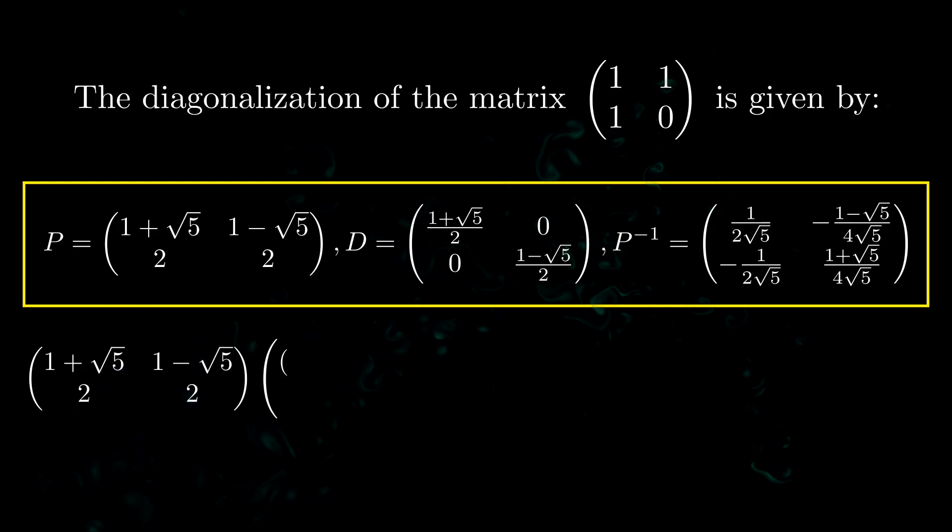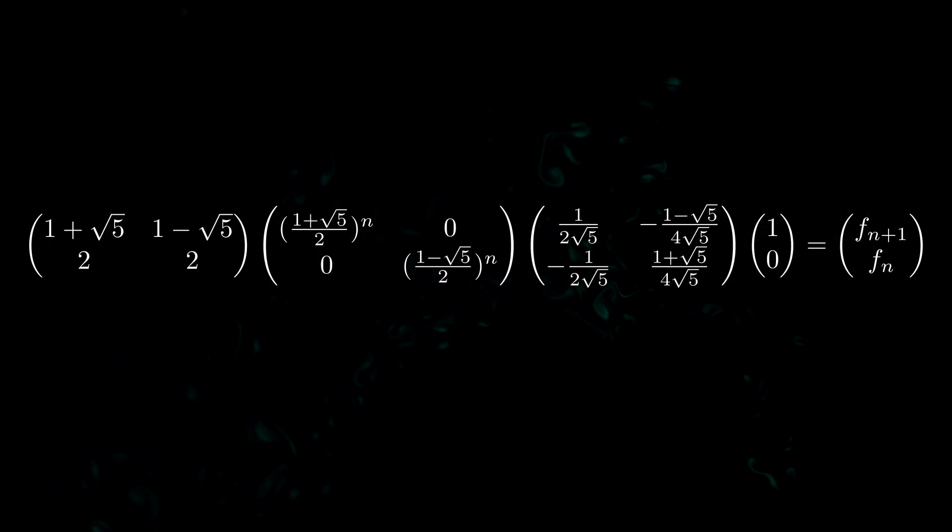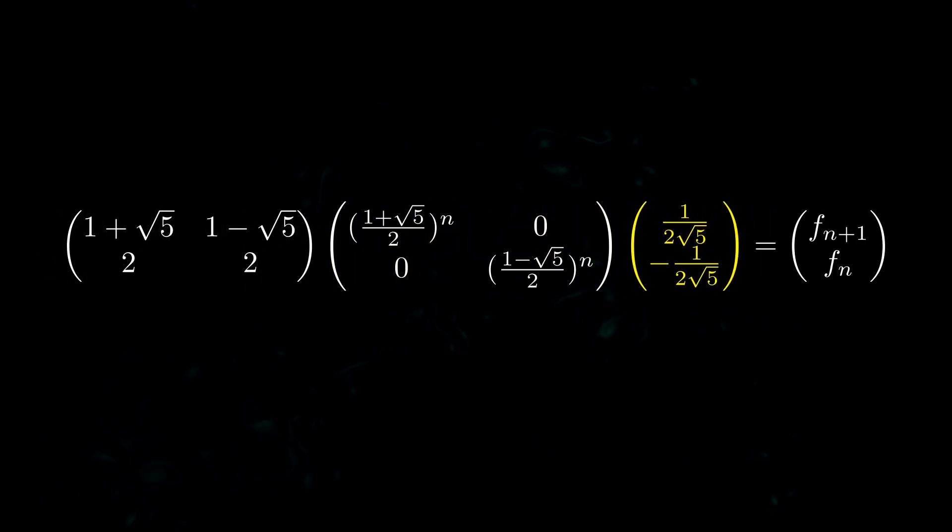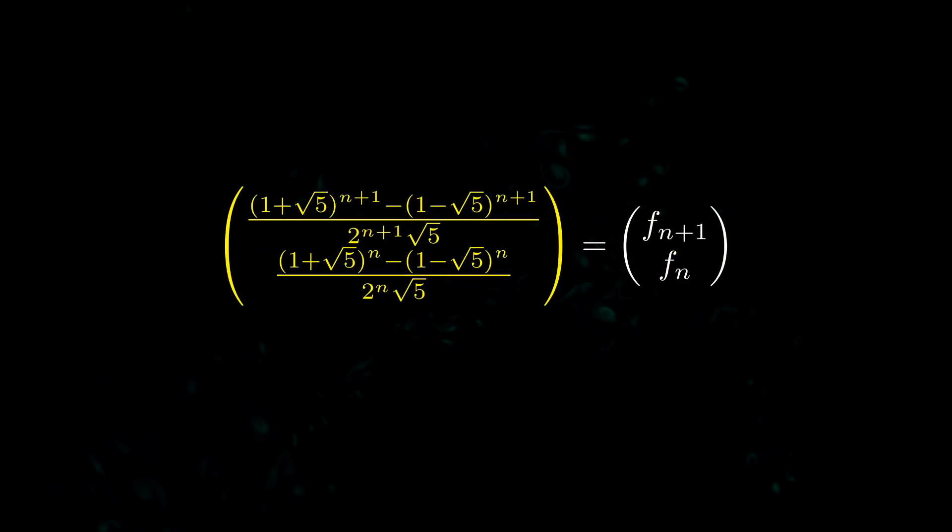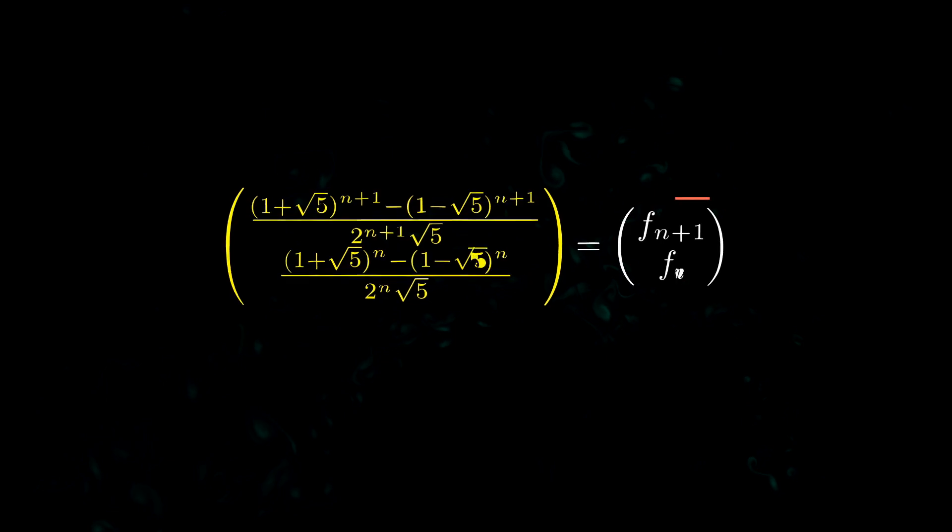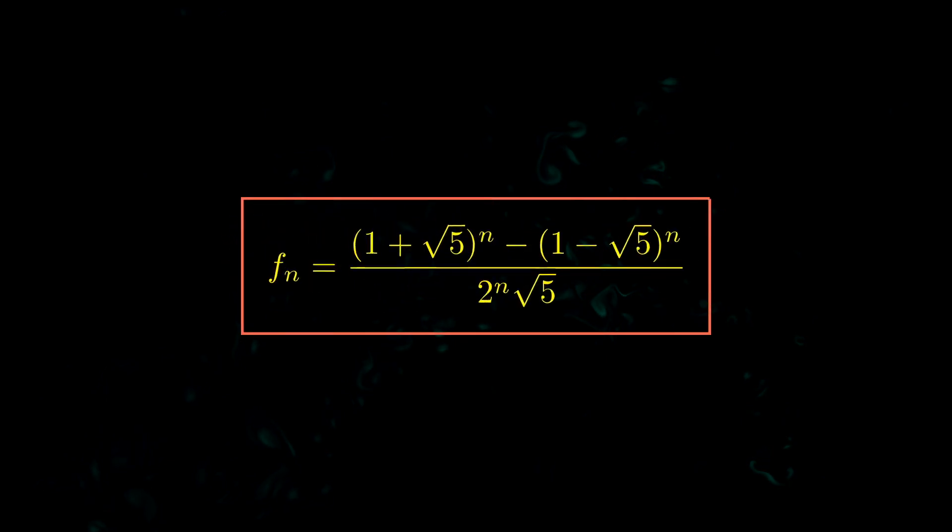So first we need to consider what we saw earlier which was the representation of the consecutive Fibonacci number vector and it's going to be this matrix product. So we multiply these two yellow matrices together then we multiply the next two matrices together and then we finally get this last matrix product we multiply them together and then we see in the second component here we're going to get exactly the formula for the nth Fibonacci number which is Binet's formula that we saw earlier.